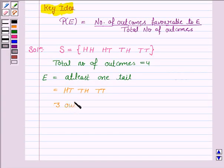So, the favorable outcomes to E are head, tail, tail, head and tail, tail. So, these are three outcomes favorable to E.